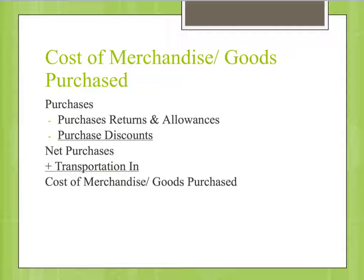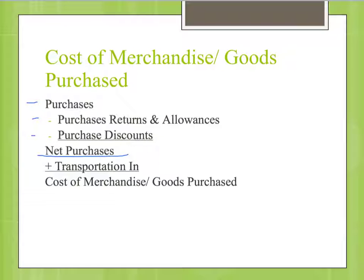Within the cost of goods sold schedule, there is a line for cost of merchandise purchased — it is its own sub-schedule. It deals with how we arrive at what we purchased. We take Purchases, minus Purchase Returns and Allowances, minus Purchase Discounts, to give us net purchases. To net purchases, we add Transportation In — the amount paid to ship goods to us — which becomes part of our purchase cost. All of this together is the cost of merchandise purchased.